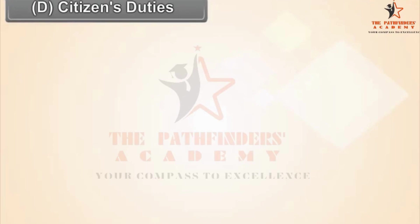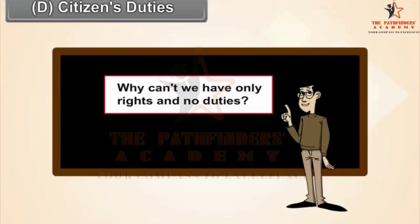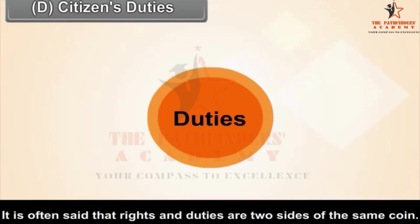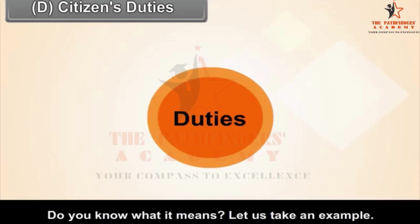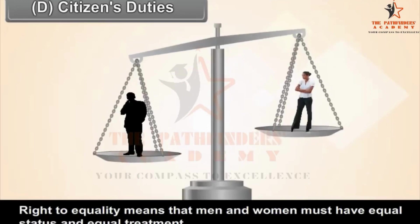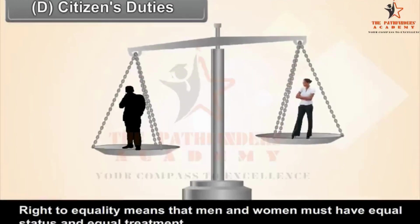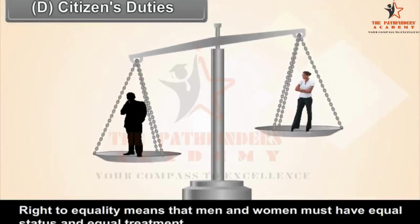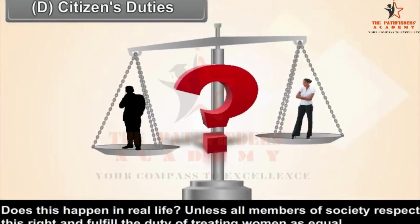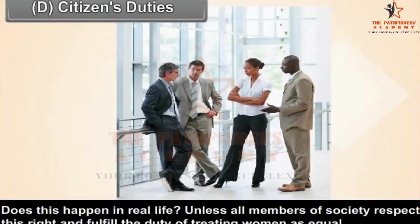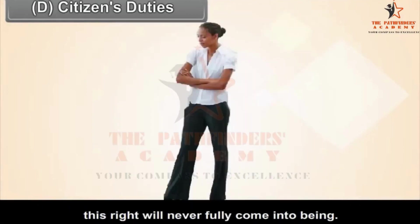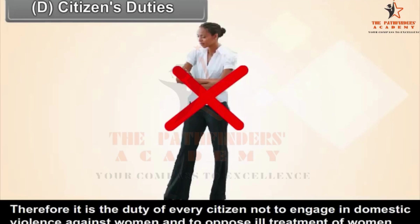Citizens have duties as well as rights. Why can't we have only rights and no duties? It is often said that rights and duties are two sides of the same coin. For example, the right to equality means that men and women must have equal status and equal treatment. Unless all members of society respect this right and fulfill the duty of treating women as equal, this right will never fully come into being.